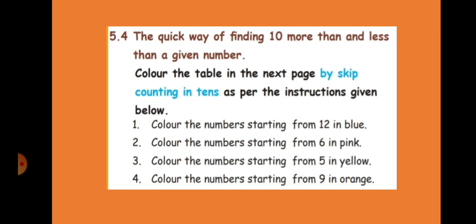The next part of this lesson is finding a quick way of finding 10 more than and less than the given number. This is nothing but they have given one table of form, and in that we have to color like this. Color the number starting from 12 in blue, color the number starting from 6 in pink, color the number starting from 5 in yellow, color the numbers starting from 9 in orange.